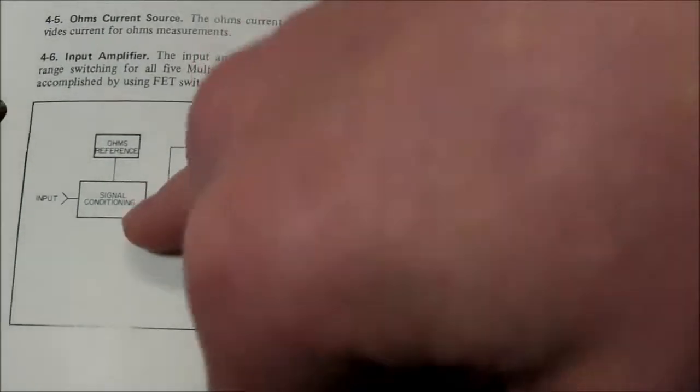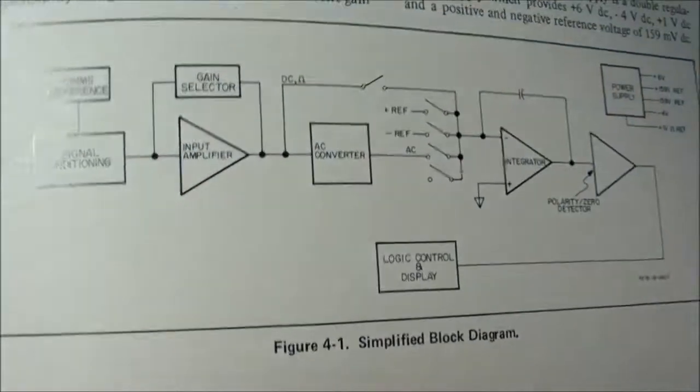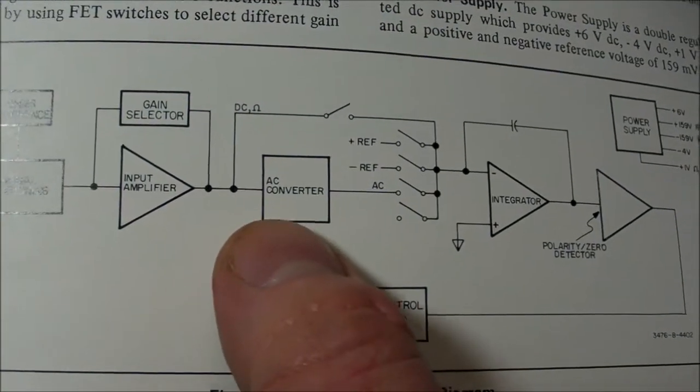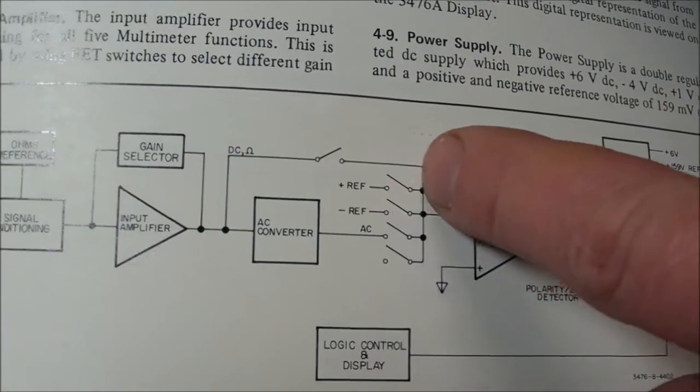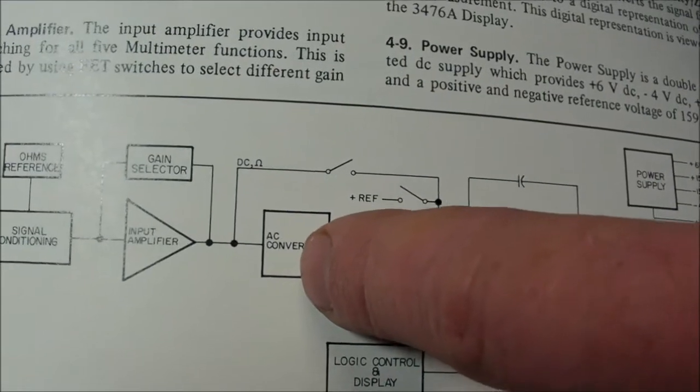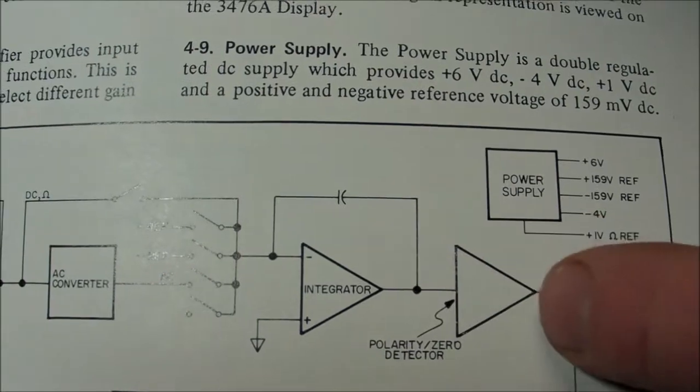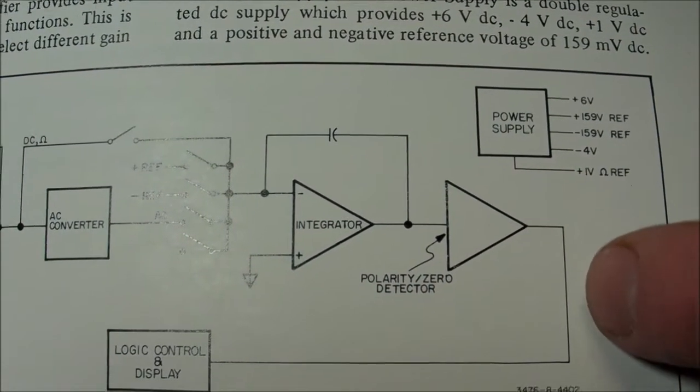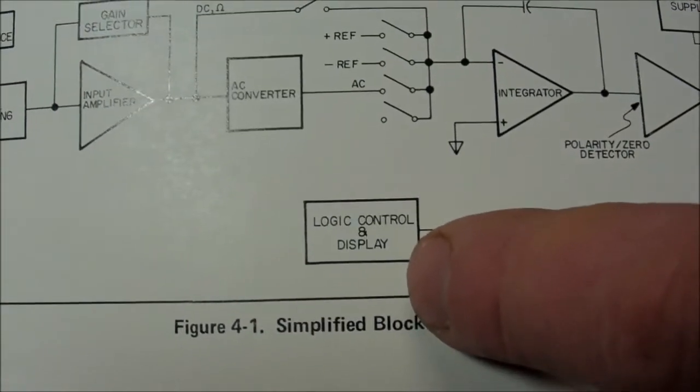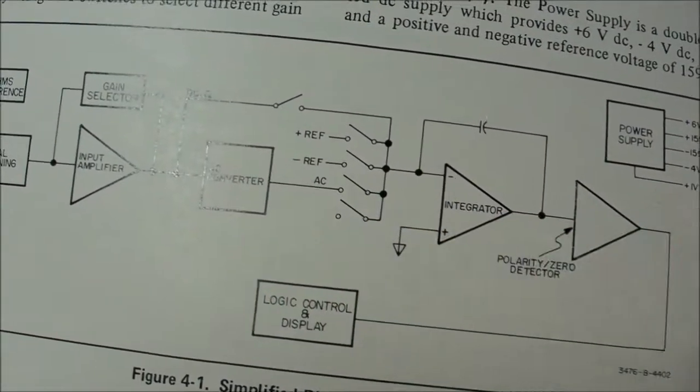Here's the block diagram: there's signal conditioning and limiting protection, ohms reference, input amplifier, and so that just takes care of gain. And of course, DC will go straight in through the switches, but if it's measuring AC voltage or current, then you've got to have an AC-to-DC converter. That goes to an integrator and polarity zero detector, and then finally to logic control and display.